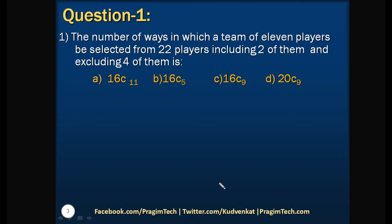First question is based on number of combinations. The number of ways in which a team of 11 players be selected from 22 players including 2 of them and excluding 4 of them.